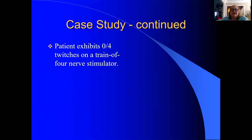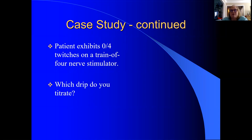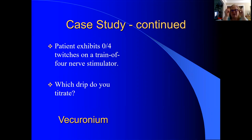She's got zero out of four twitches on that train of four nerve stimulator. Remember Leslie talked about that in our titration overview — we were looking for the thumb twitch, with a goal of two. We've got zero out of four, meaning we've actually provided too much paralysis. Which drip are we titrating? The vecuronium. Do you see how we're chasing our tails with all of this? It is finesse. Just because something was working yesterday doesn't mean it's working today, or even right now. That is the art and science of titration — we are constantly adjusting.